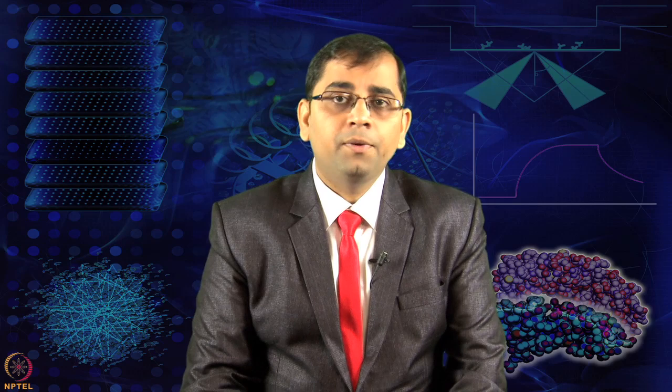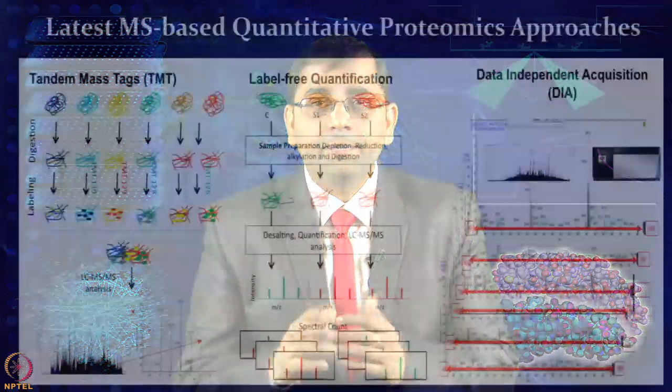Additional approaches include data-independent acquisition (DIA), where each window of mass-to-charge separation yields a very high-resolution image for label-free protein analysis. All of these represent very recent advancements in the field of proteomics, progressing from gel-based approaches to mass spectrometers and various quantitative proteomics methods.